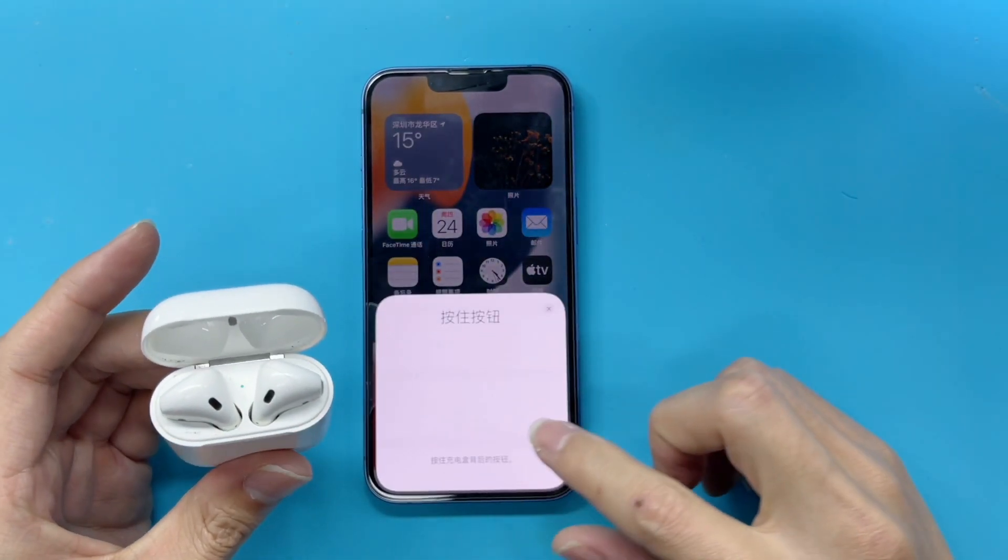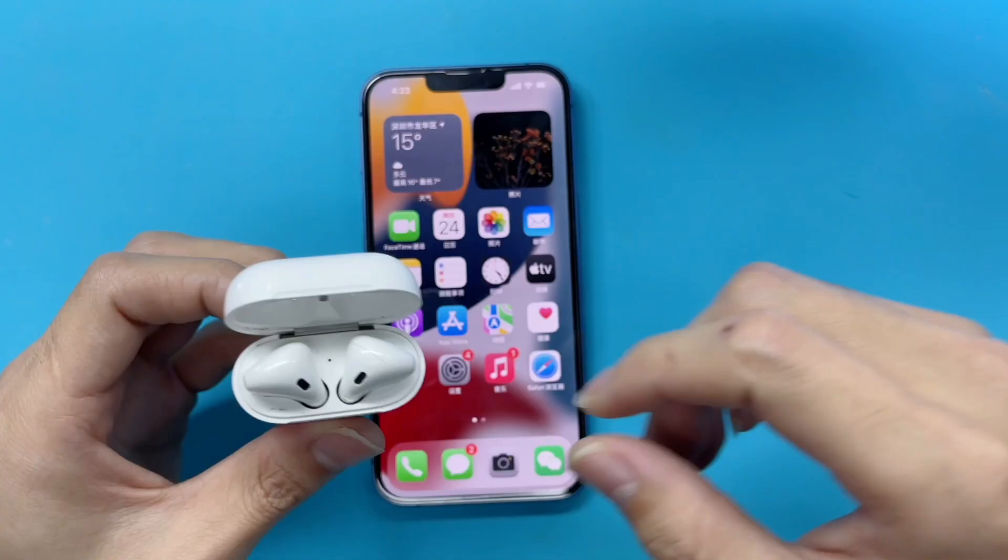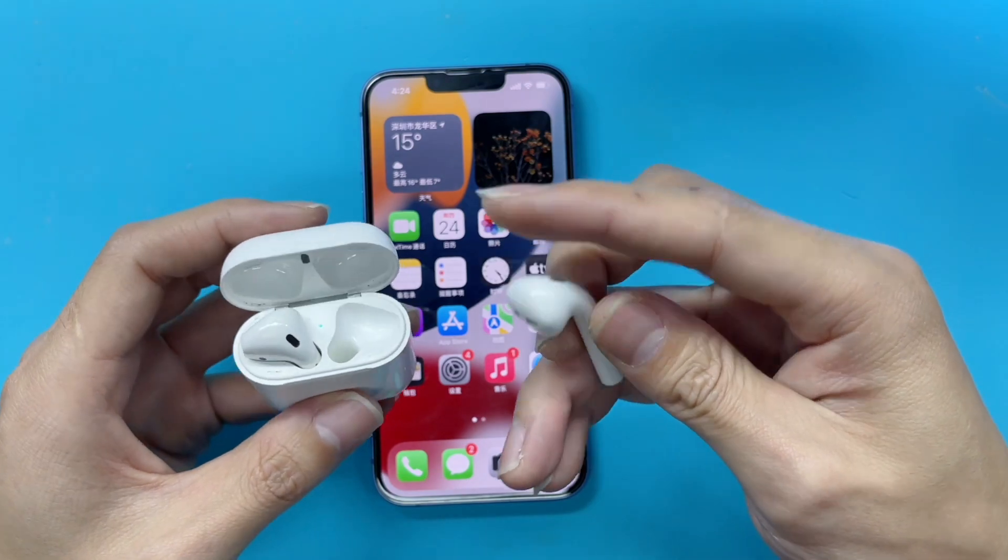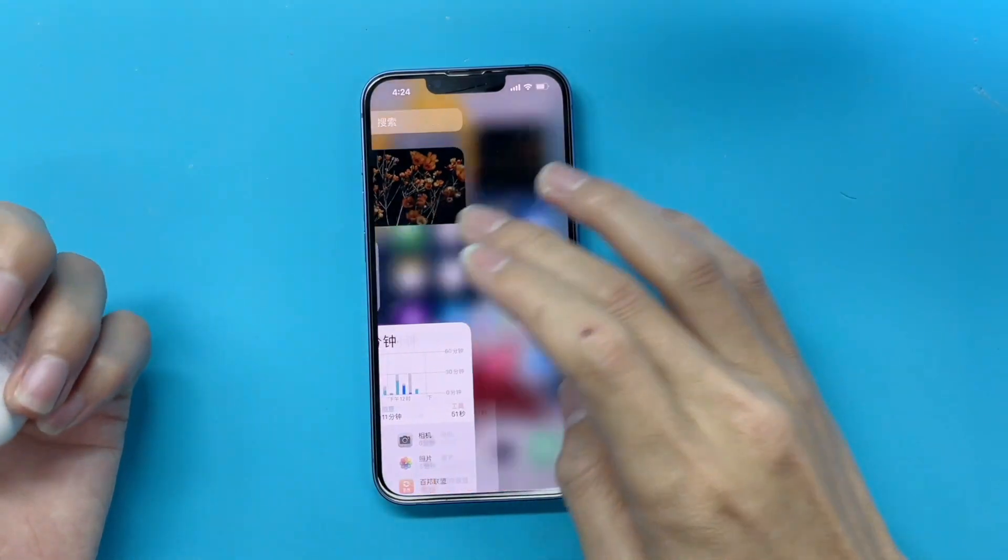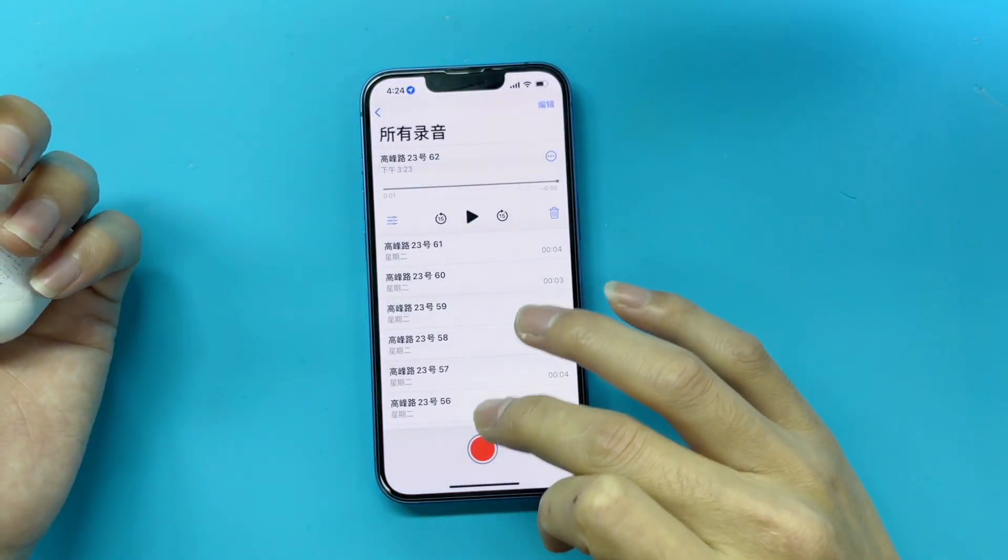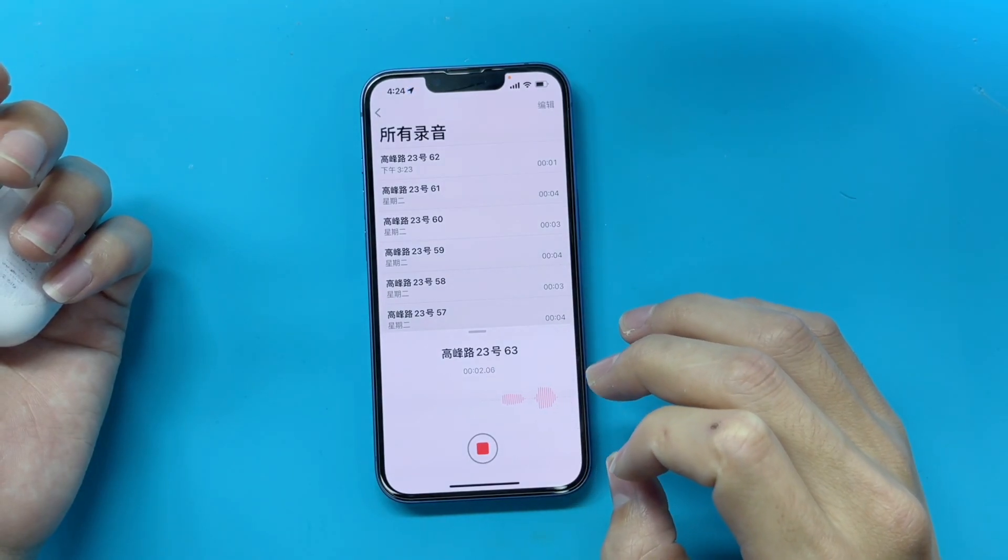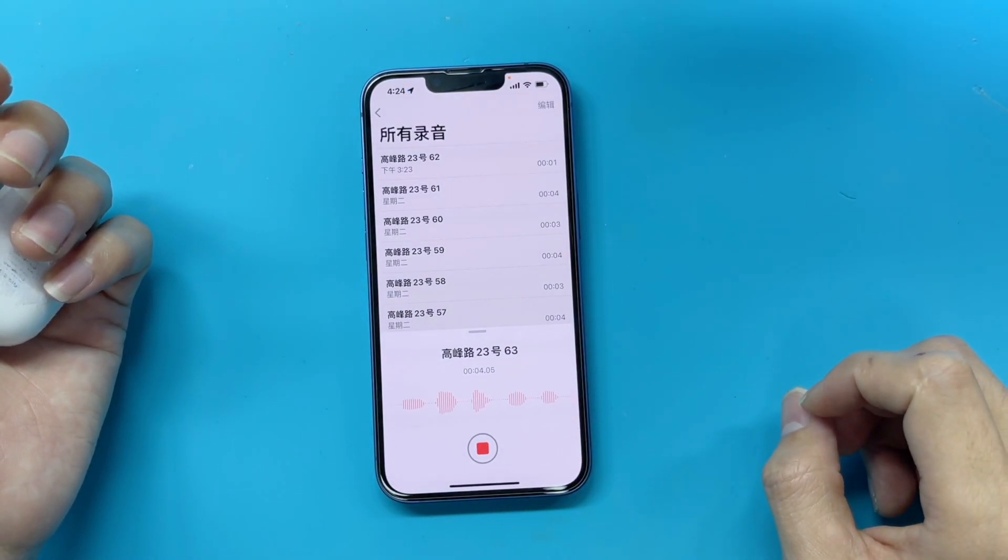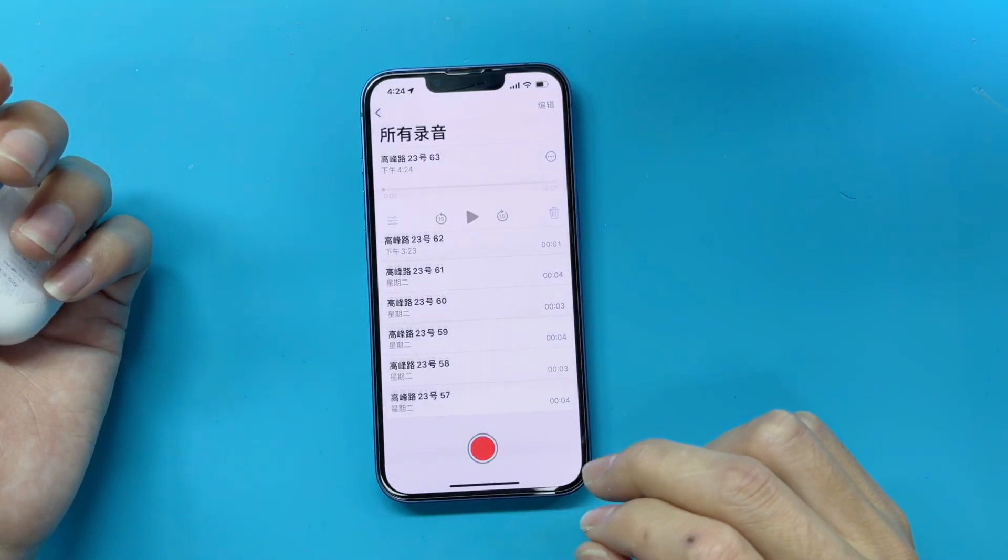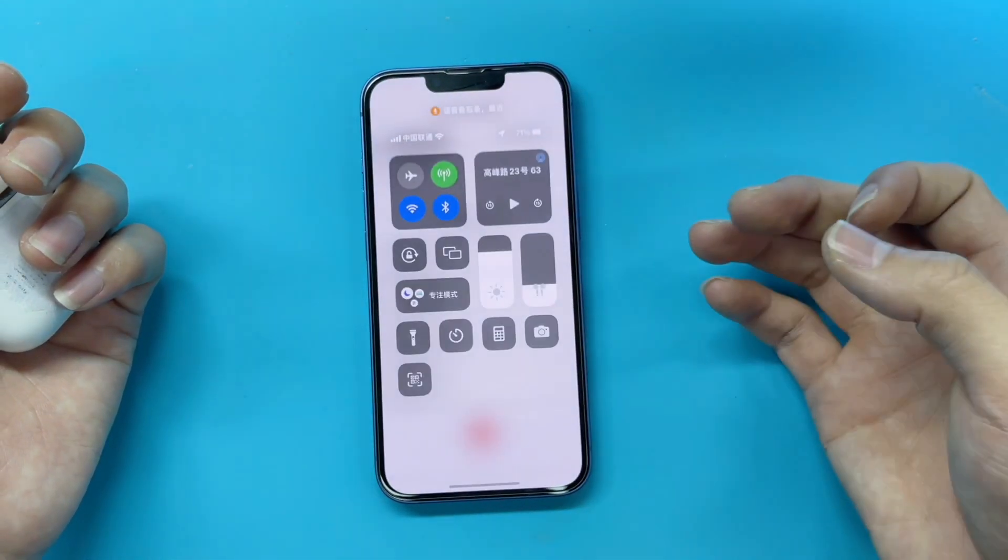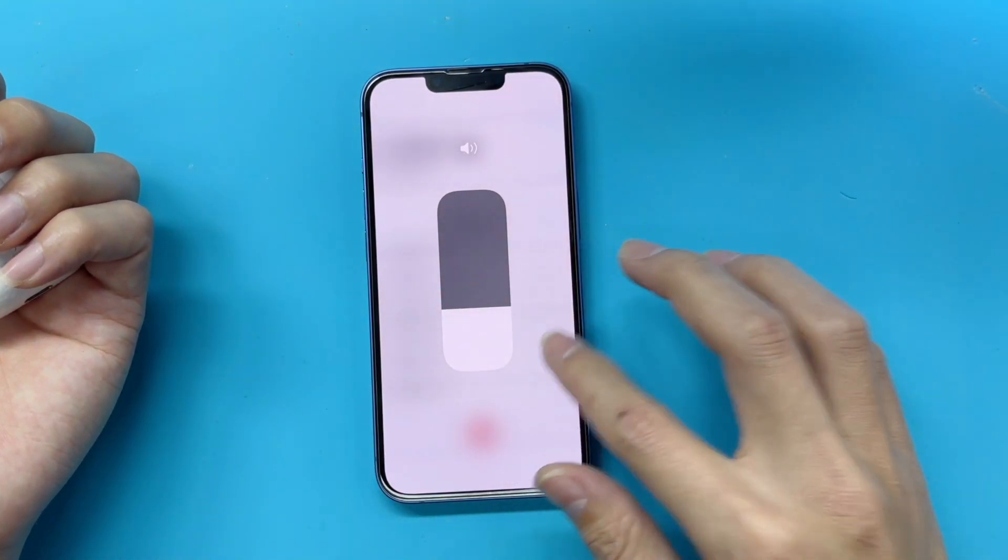Firstly, we're gonna test if it can work properly. Open the voice memos and use the AirPods to record. The AirPods disconnected from iPhone after 7 seconds and cannot work anymore. This is one of the signs that the battery needs to be replaced.